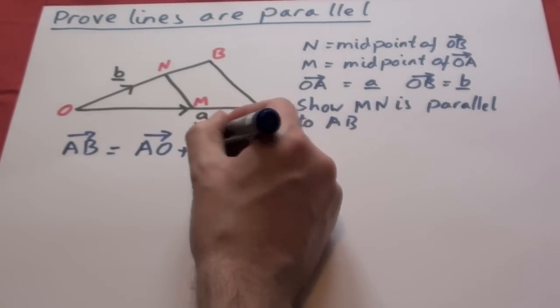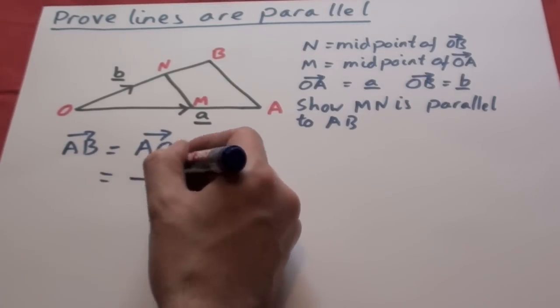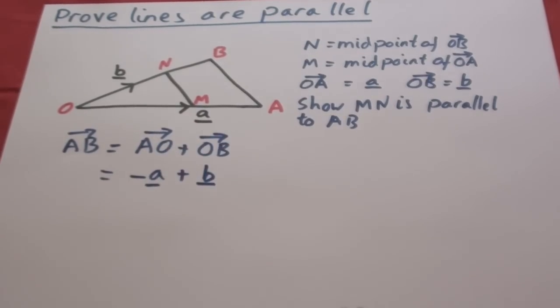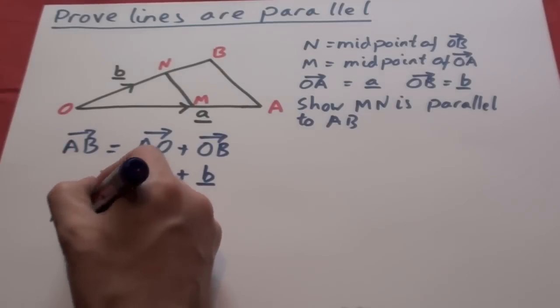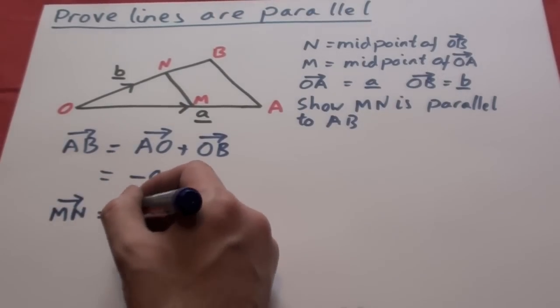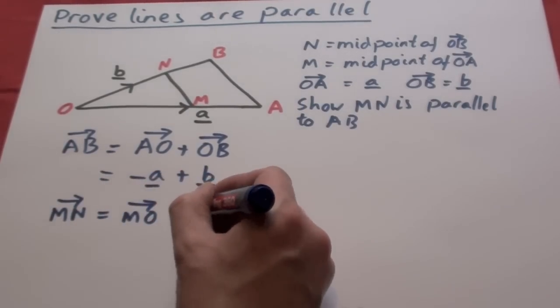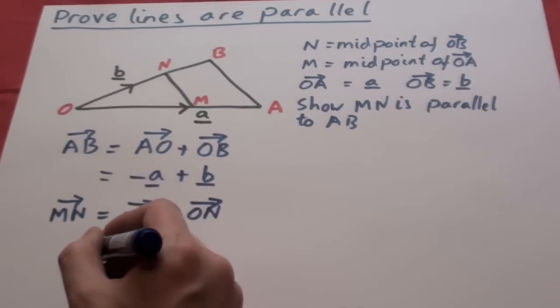So A to B equals A to O and then O to B which is minus A plus B. M to N is obviously going to be M to O and O to N.